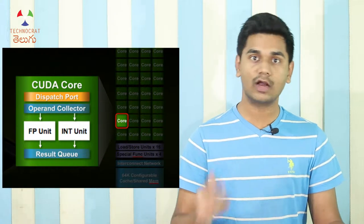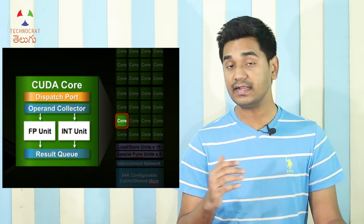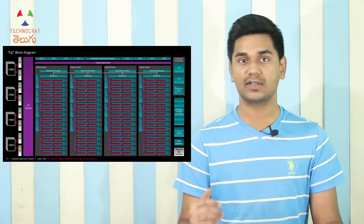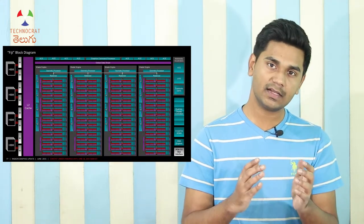In video cards, the processor inside is defined by the vendor. In NVIDIA, we have CUDA cores — Compute Unified Device Architecture. In AMD GPUs, we have Stream Processors. Both provide parallel processing capability, though they work differently for the CPU and GPU.